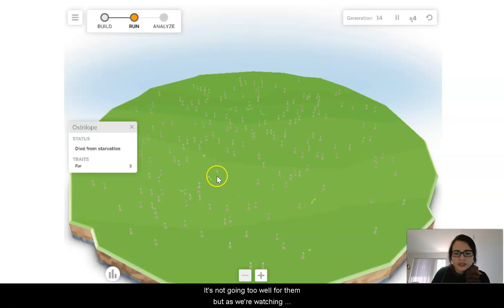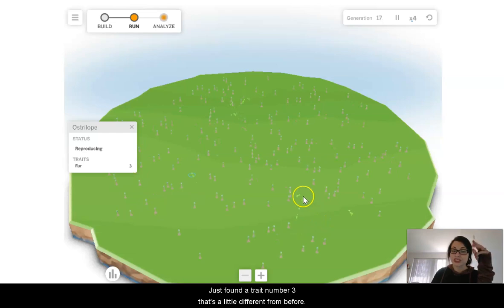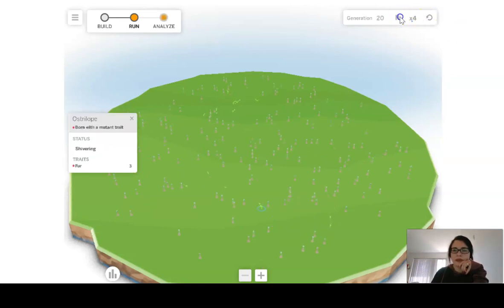Well, it's not going too well for them. But as we're watching, they're not totally dying out. And I just found a trait 3. Just found a trait number 3 that's a little different from before. So I'm going to stop here for a moment, fast forward in time, and we're going to take a look at what happens after 70 generations of this.